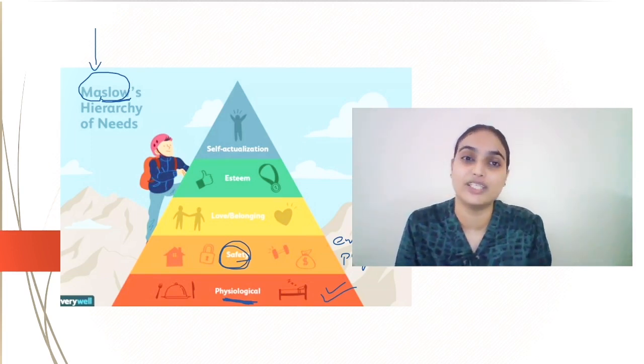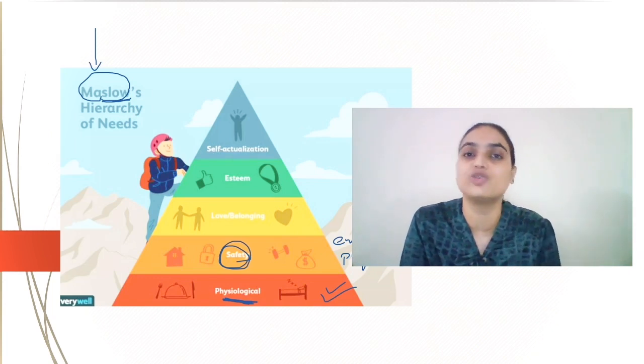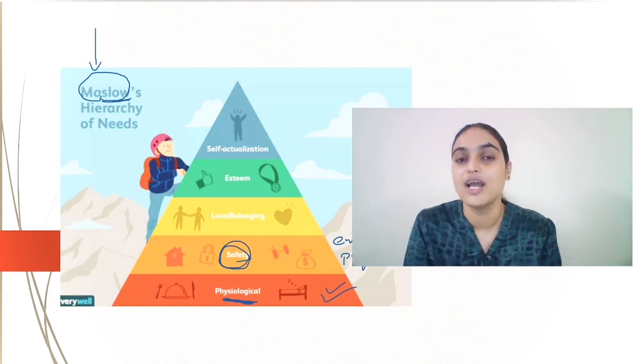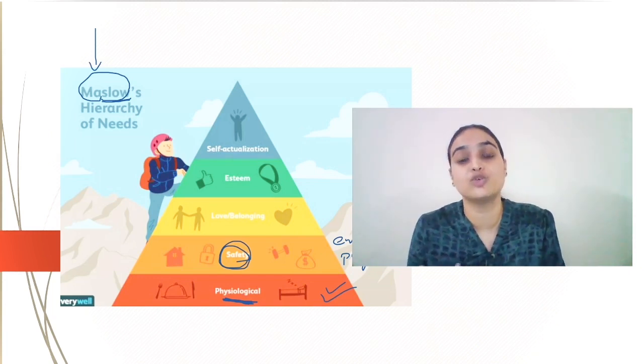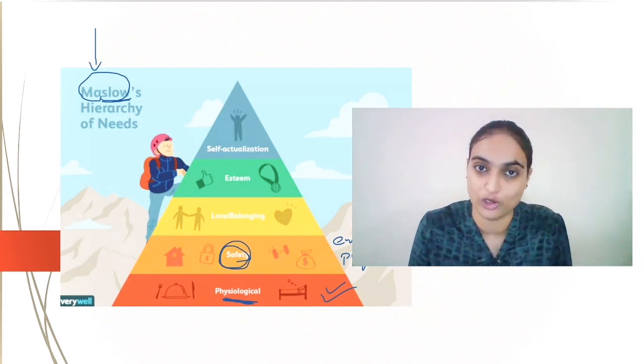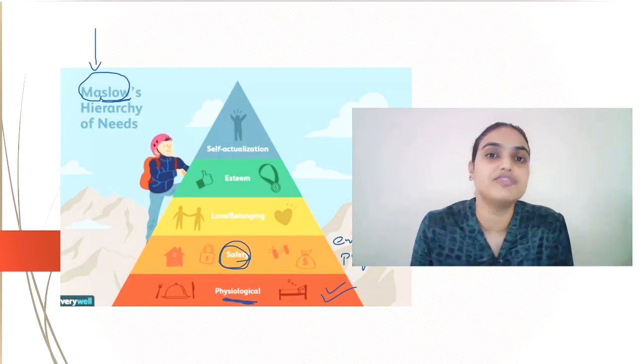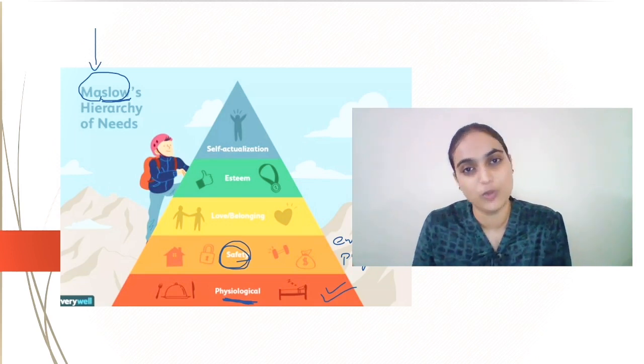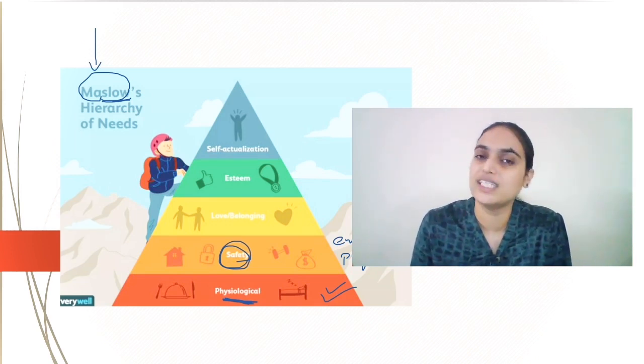You will take a life insurance so that after you, there is someone to take care of your family. So for achieving all these things in life, you put in a lot of efforts. So safety needs are the next level needs which motivate a person.